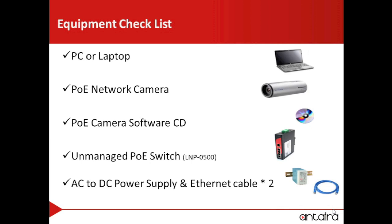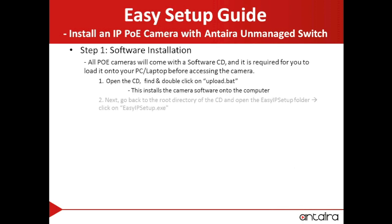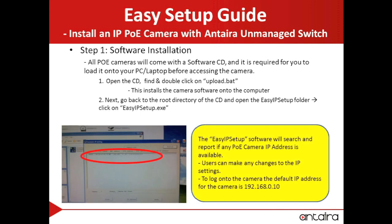Now on to step one. First, install your PoE camera software onto your computer. This software installation is required before you can access your PoE camera. Once you've loaded the software, find and double-click the .bat file to start the install. Next, go back to the root directory of the CD and open the setup folder, then click on the .exe file. Later on, you can run the software to search and report if the IP address for your camera is available — this will be after you've networked the PoE camera. You should be able to change the IP settings at any time by logging into the camera's default IP address.